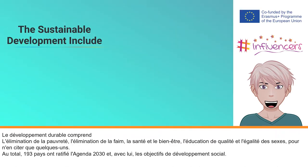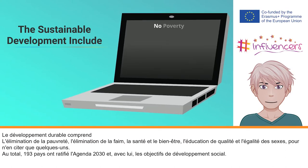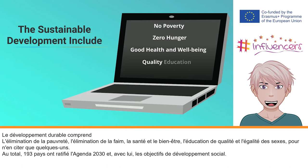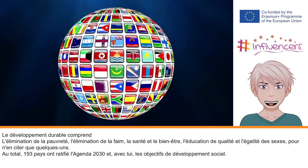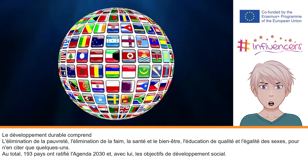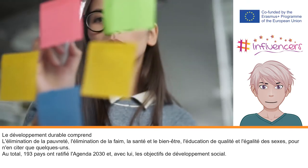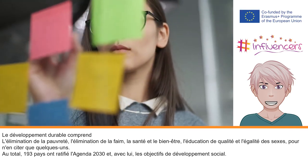The sustainable development goals include no poverty, zero hunger, good health and well-being, quality education and gender equality, to name a few. A total of 193 countries have ratified Agenda 2030 and with it the social development goals.